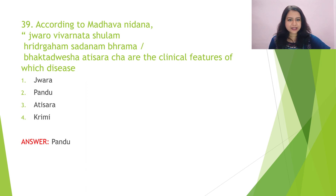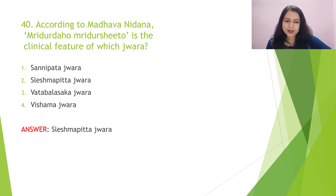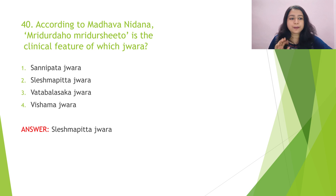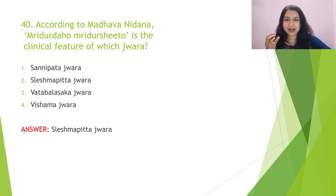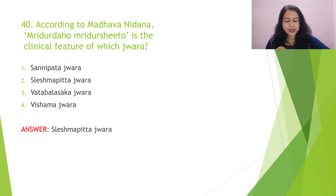Question 40: According to Madhava Nidana, mridur daha and mridur shita is the clinical feature of which jvara? The options are sannipata jvara, shleshmapittaja jvara, vata-balasaka jvara, and vishama jvara. The answer is shleshmapittaja jvara — the daha factor owes to pitta and the shita factor is due to shleshma. Note: according to Ashtanga Hridaya muhur daha muhur shita, and according to Charaka shane daha shane shita — both refer to sannipata jvara. Please keep all three points in mind.